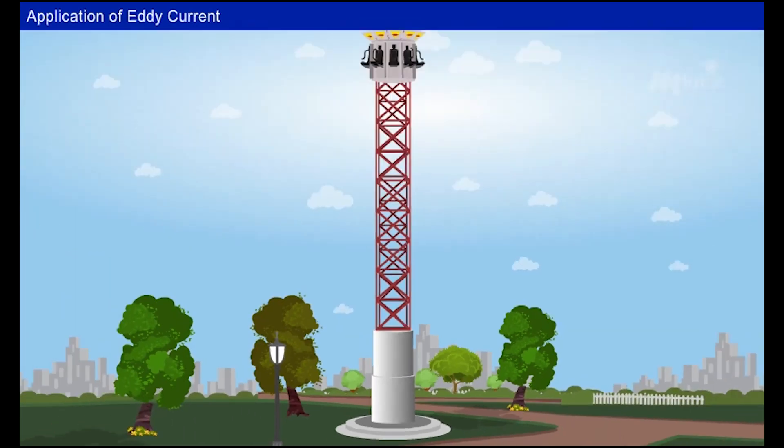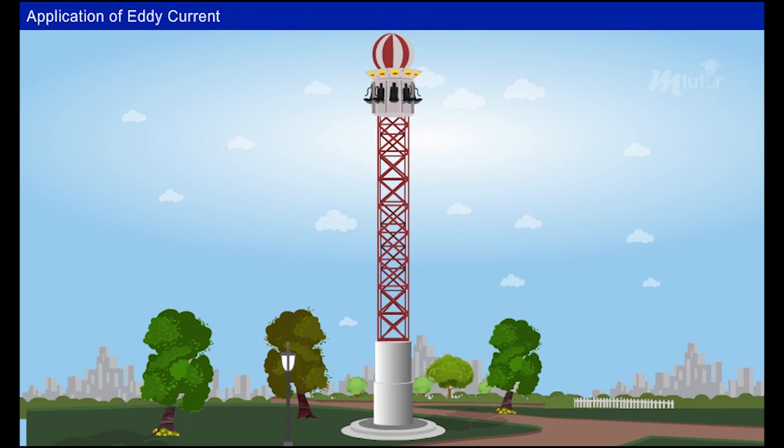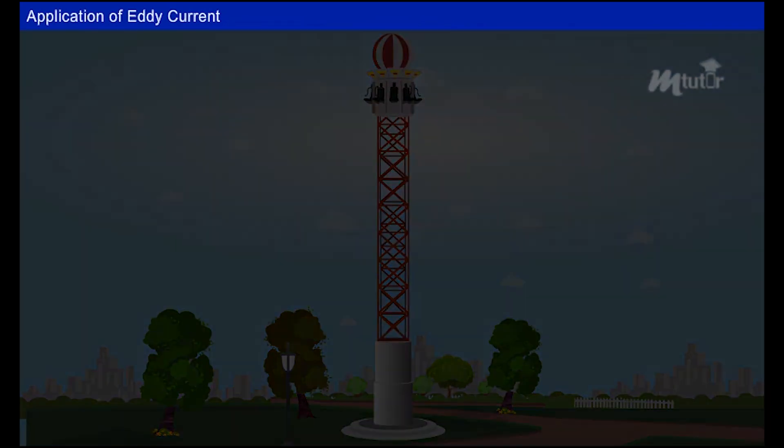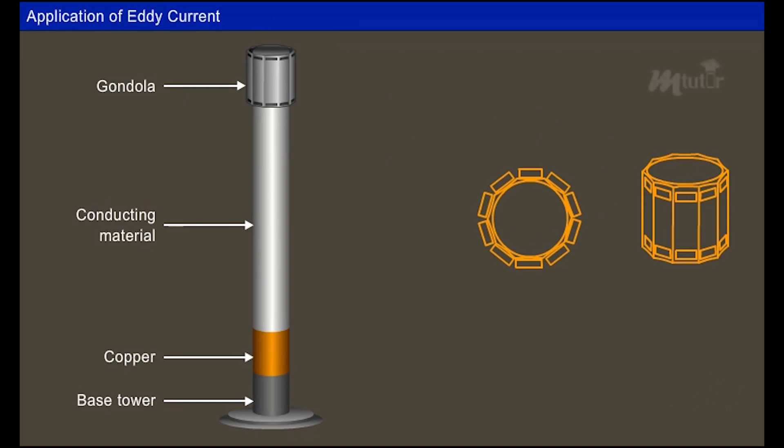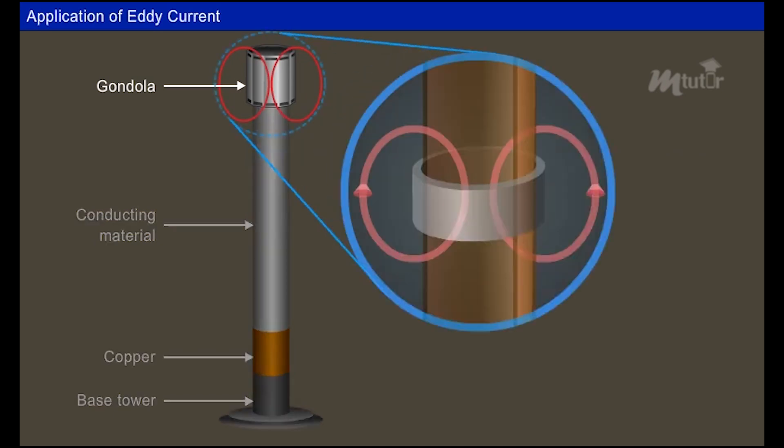Let's understand the phenomenon of eddy current breaking in the ride. The free fall consists of a tower made of a cylindrical conducting material standing on a copper cylinder with the same diameter. The gondola is made from an aluminum cylinder. It has the same diameter as the tower with vertically cut flat sites where permanent magnets are mounted.